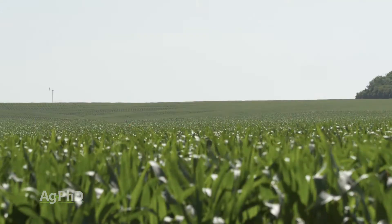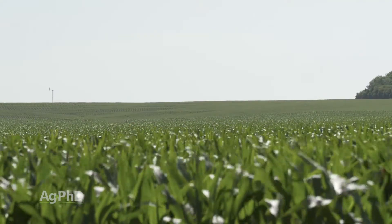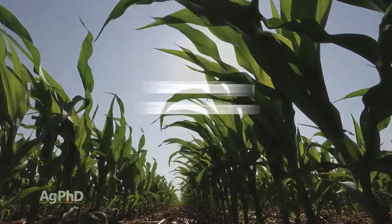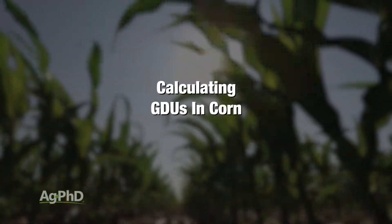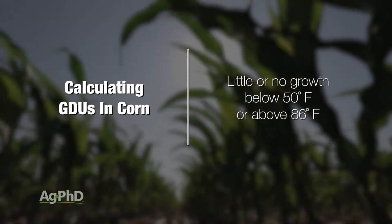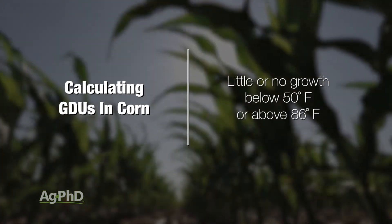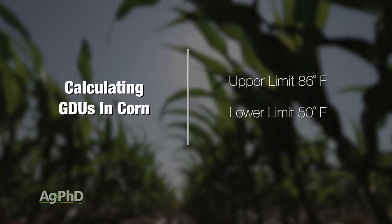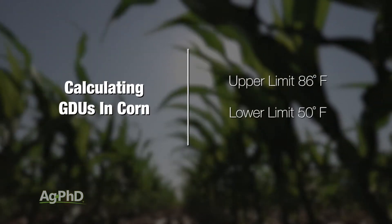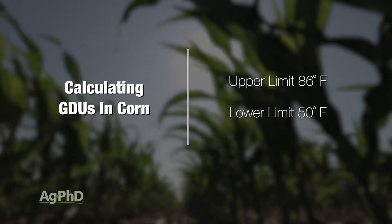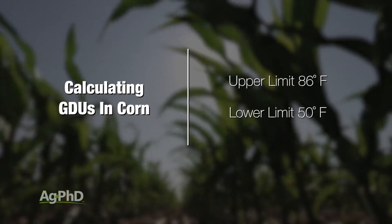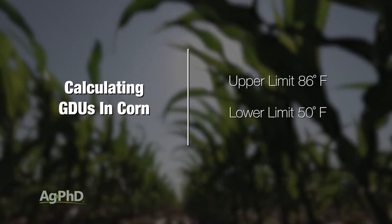Let's talk about corn, because that's really the number one crop that this whole GDU thing is used for in the United States. With corn, there really isn't much growth below 50 degrees and there isn't great growth above 86 degrees. So you've got a top end of 86 and a bottom of 50. Any number below 50 you just drop off and figure 50; any number above 86 you drop off and just figure 86 for a max.